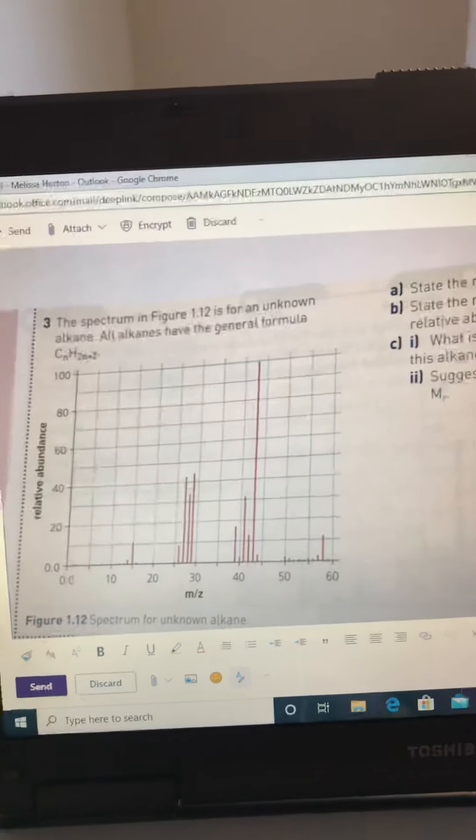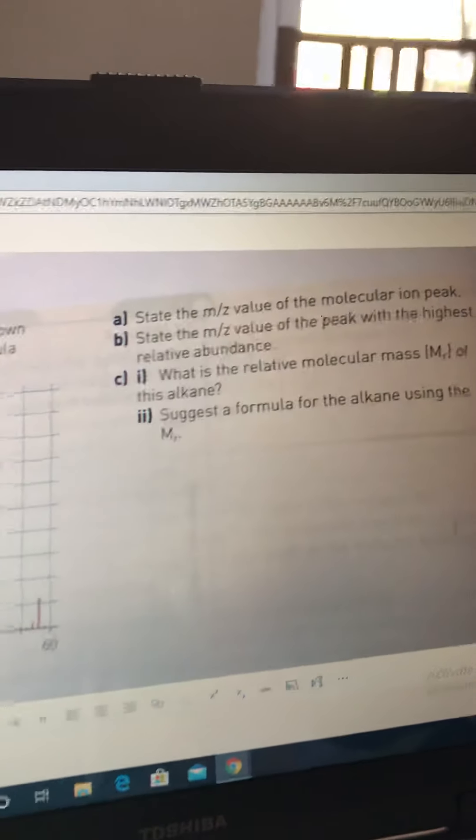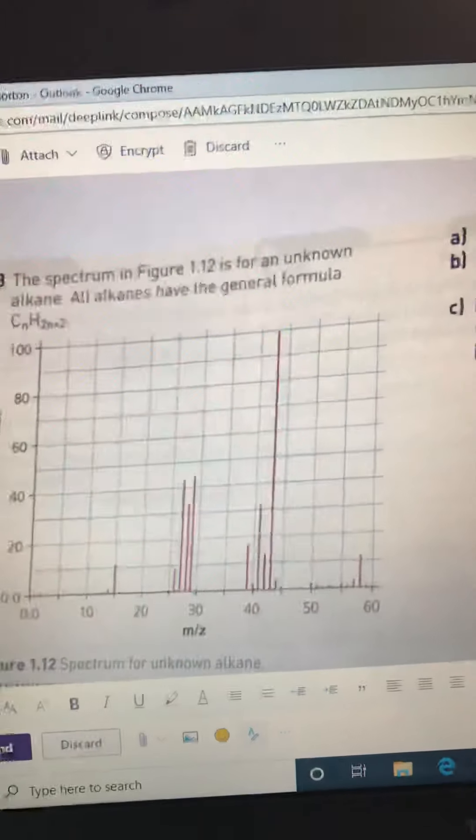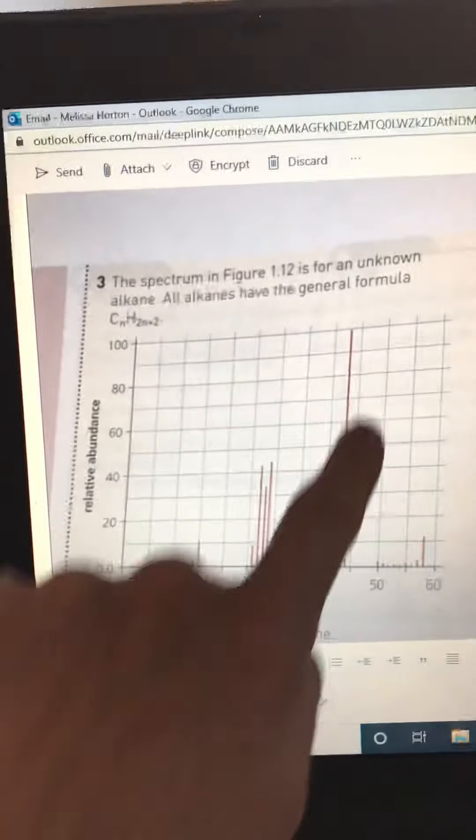Okay, hi Gary. I thought probably easiest to answer your question by video. So question 3a: state the m/z value of the molecular ion peak. Well, the molecular ion peak, when you're interpreting the spectra, the molecular ion peak is always the one furthest down this end.